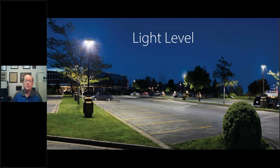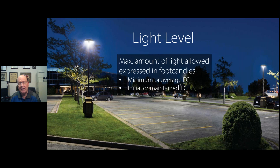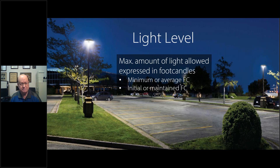Light levels: it's not just enough to know the levels. The ordinance specifies a maximum amount of light allowed, but you also need to know whether it's a minimum or average light level expressed in foot candles, and whether it's initial or maintained. Often ordinance language specifies minimum initial foot candle levels — not averages, not maintained — giving more control and less gray area.